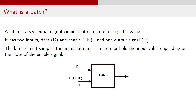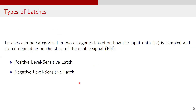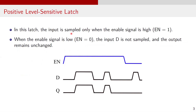The enable signal EN is usually a clock signal in sequential latch circuits. Latches can be categorized based on how the input data D is sampled and stored based on the state of the enable signal. There are two categories: positive level sensitive latches and negative level sensitive latches.